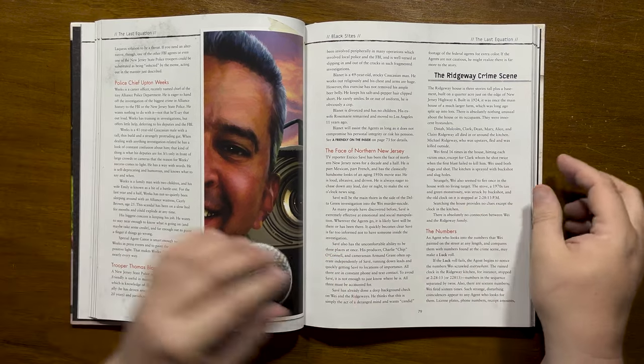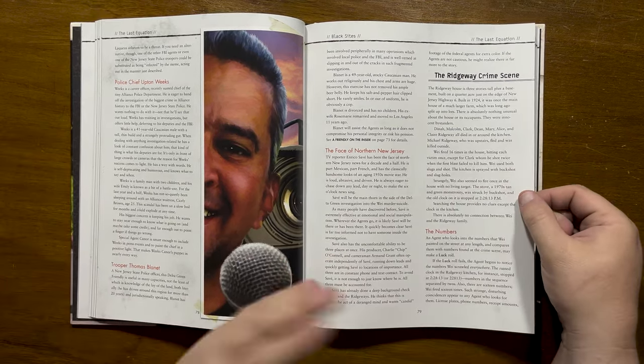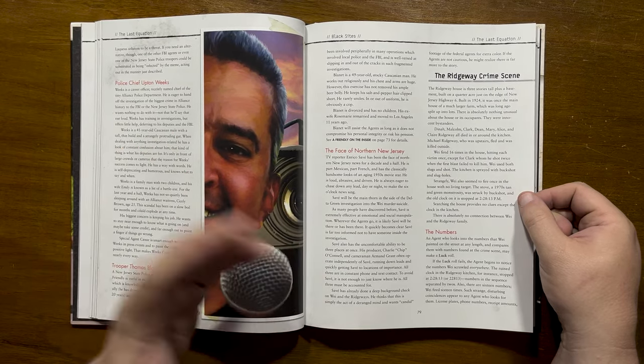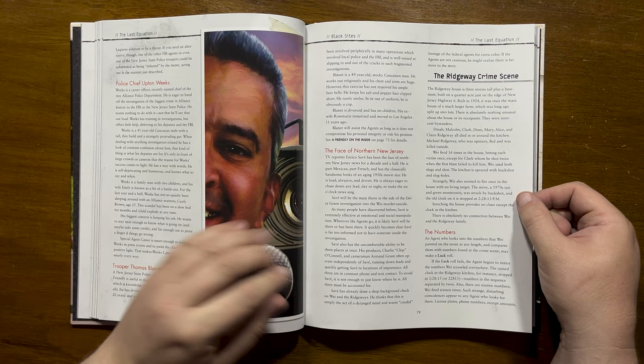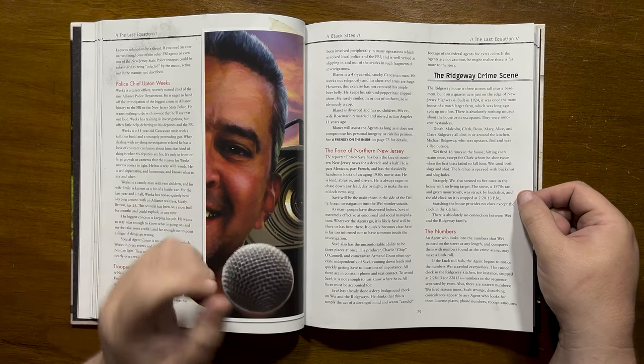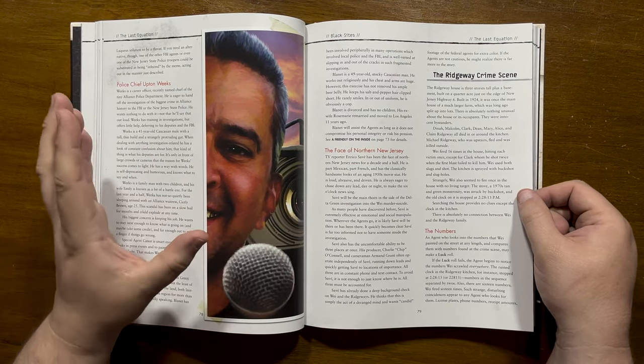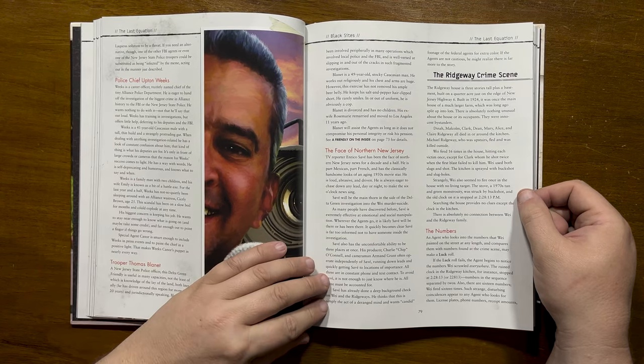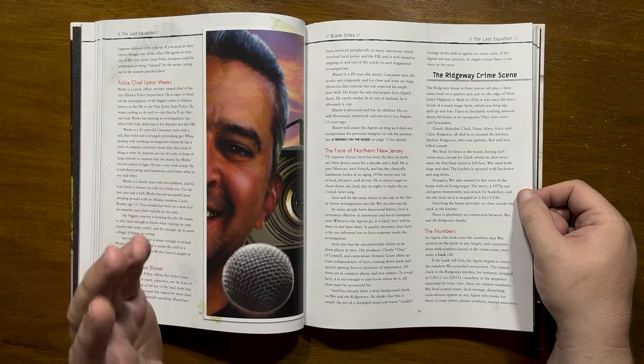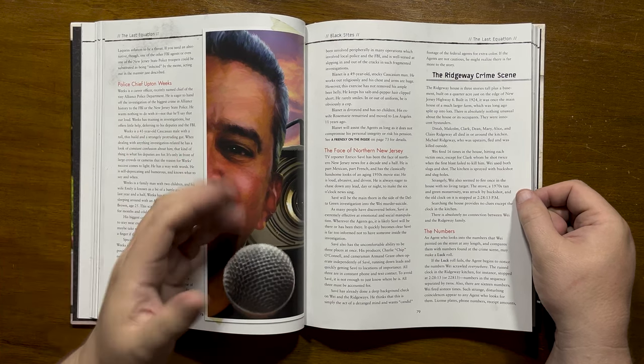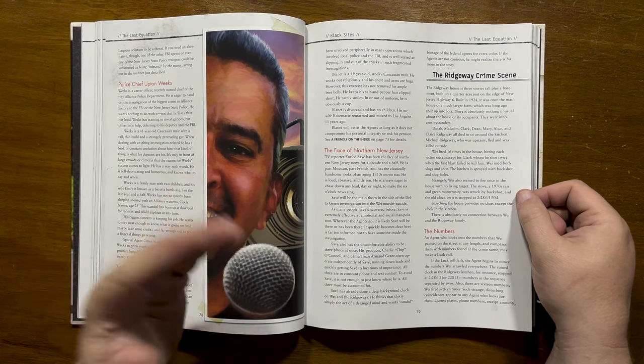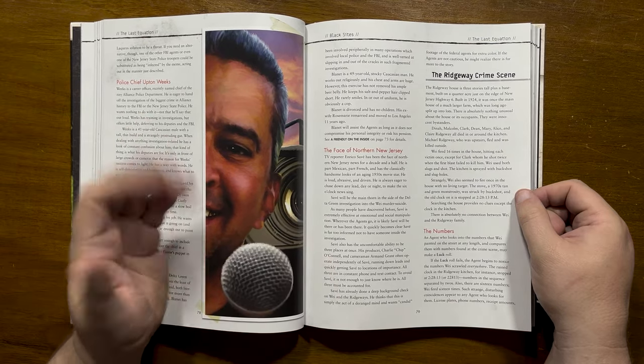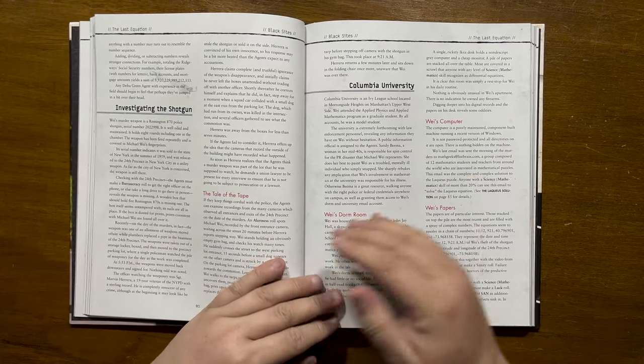Next we have details on the Ridgeway crime scene. Here we have many examples of the Laqueous solution numbers. The clock is stopped at 22813 which is part of the equation. There were 16 numbers in the solution and there were 16 shots fired. Everything about the Ridgeways adds up to the numbers. If the agents investigate the shotgun, they get an even stranger set of circumstances. The gun is a Remington 870 police shotgun which has a serial number containing the Laqueous numbers and it flags as still being in police possession, which is clearly not the case. The agents can investigate further and find the box that it's supposed to be in and find that it is missing.